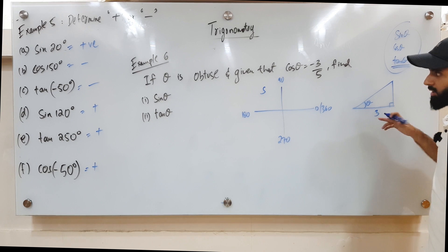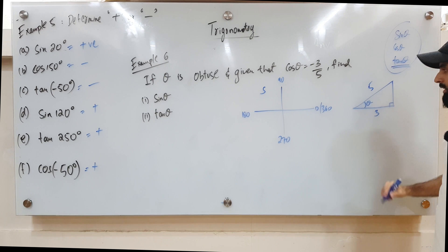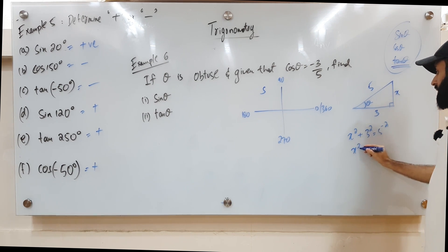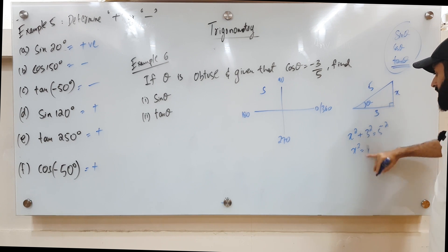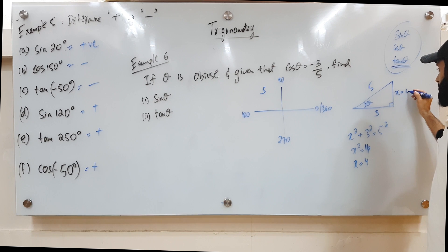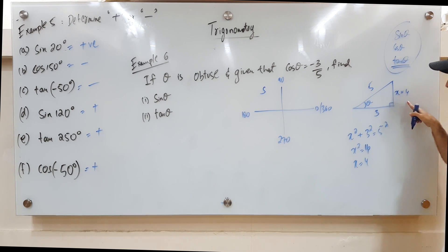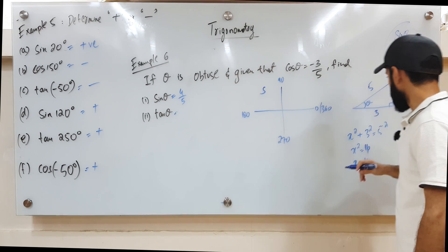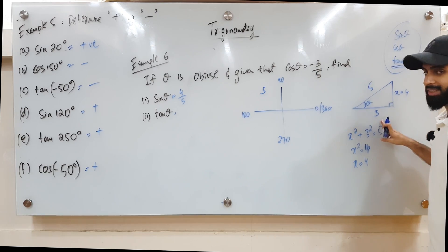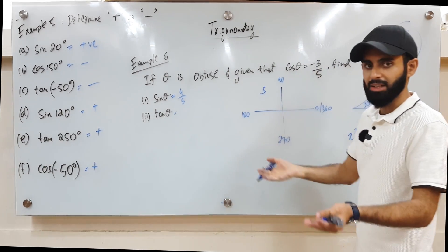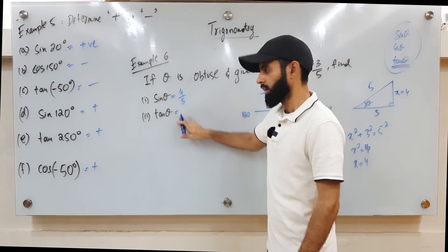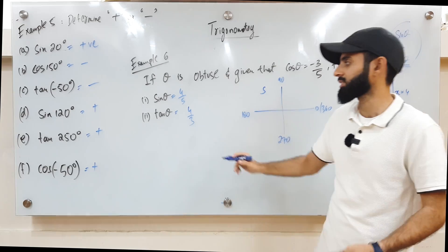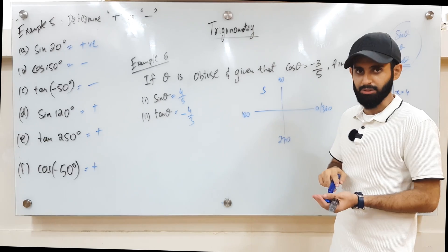Using Pythagoras' theorem: x² + 3² = 5², so x² = 25 − 9 = 16, giving x = 4. So sine theta equals opposite over hypotenuse. As for tan theta, it equals opposite over adjacent, which is 4 over 3. But bear in mind that we are in the second quadrant, so all trigonometric functions except sine are negative. So tan theta equals negative 4 over 3.